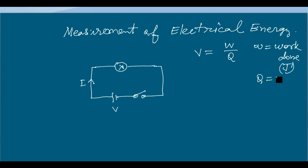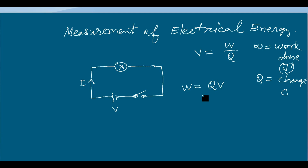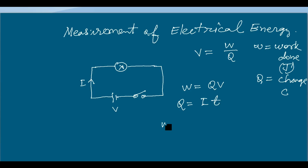So V equals W divided by Q, where W is work done in joules and Q is the charge in coulombs. We can rearrange this as W equals Q times V — this is the energy equation in terms of charge and voltage. We also know that Q equals I times T, where T is in seconds and I is in amperes. So we can substitute Q in the energy equation.